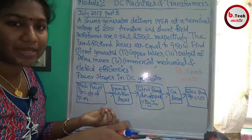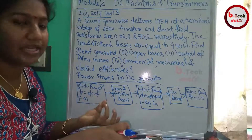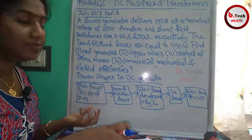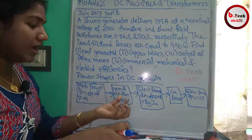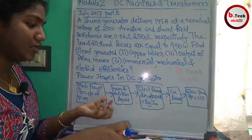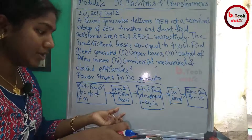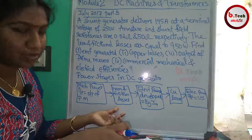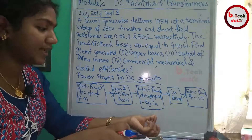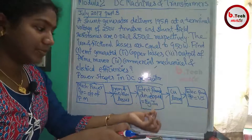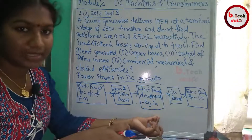We have a steam power plant with a turbine — that is the prime mover. The output goes into the generator. What are the mechanical losses? That means iron and frictional losses — we lose some power there. After those losses, we have the power developed in the armature of the generator, which is EgIa.